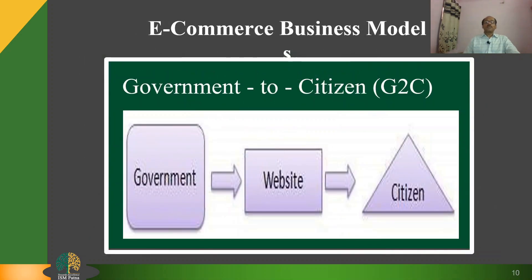Government to Citizen, G to C: the government uses G to C model websites to approach citizens in general. Such websites support auctions of vehicles, machinery, or any other material, and also provide services like registration for birth, marriage, or death certificates. The main objective of G to C websites is to reduce the average time for fulfilling people's requests for various government services.